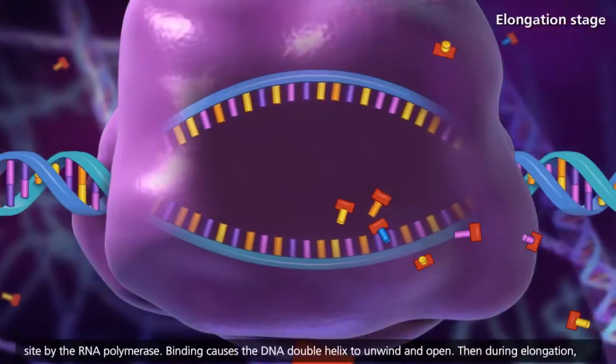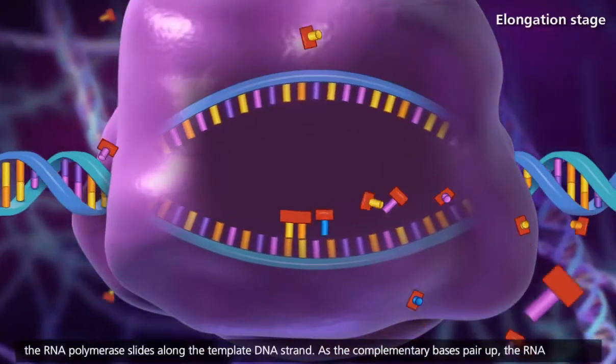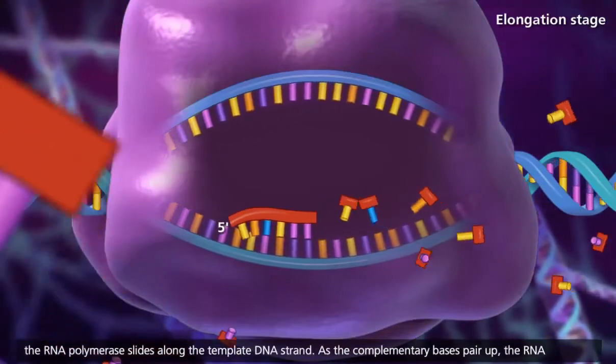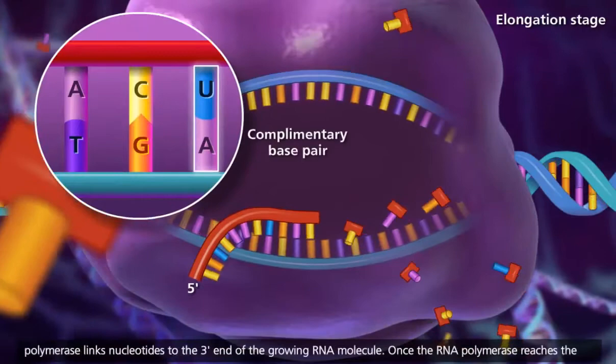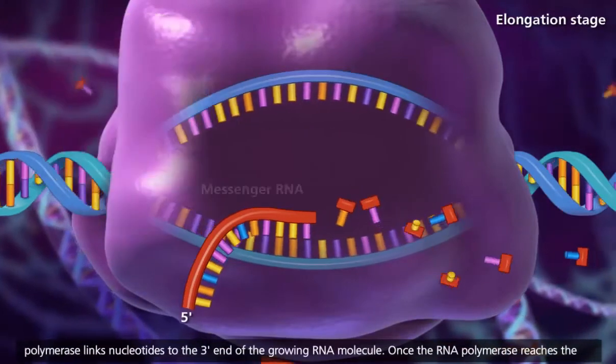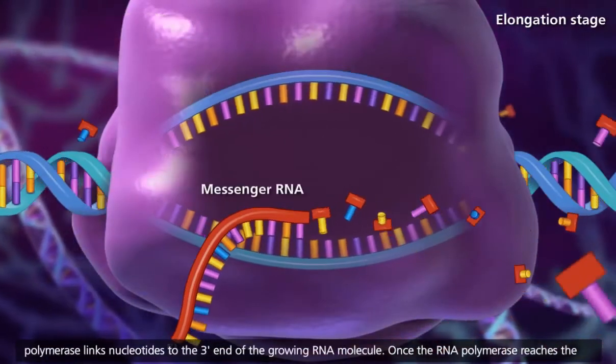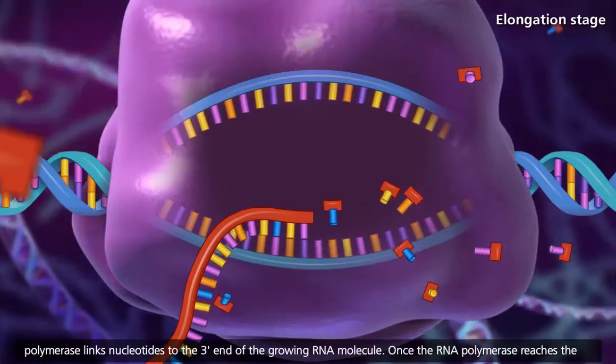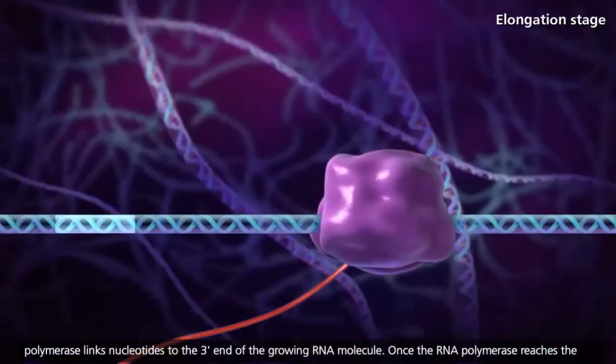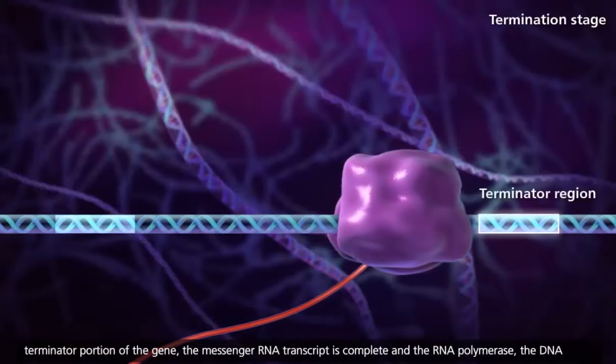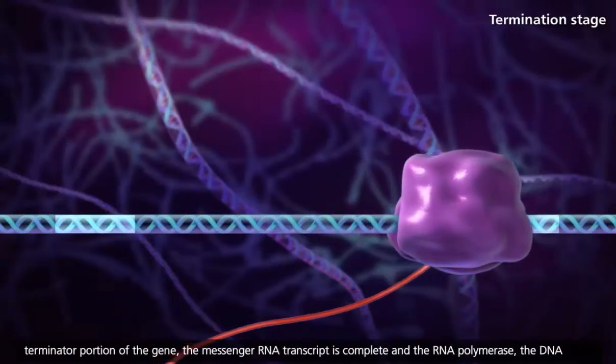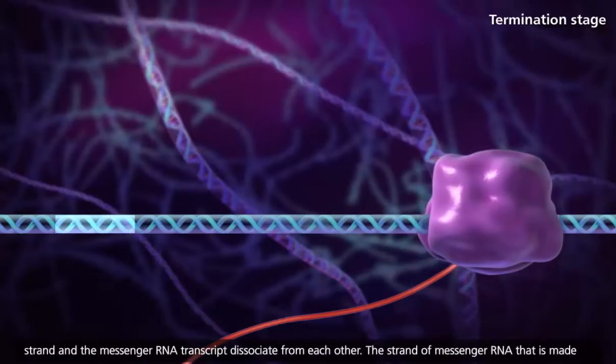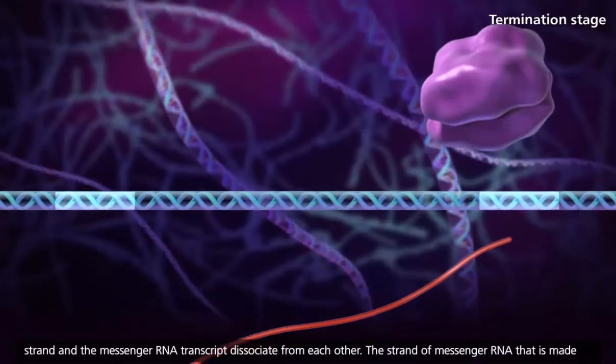Then during elongation, the RNA polymerase slides along the template DNA strand. As the complementary bases pair up, the RNA polymerase links nucleotides to the three-prime end of the growing RNA molecule. Once the RNA polymerase reaches the terminator portion of the gene, the messenger RNA transcript is complete, and the RNA polymerase, the DNA strand, and the messenger RNA transcript dissociate from each other.